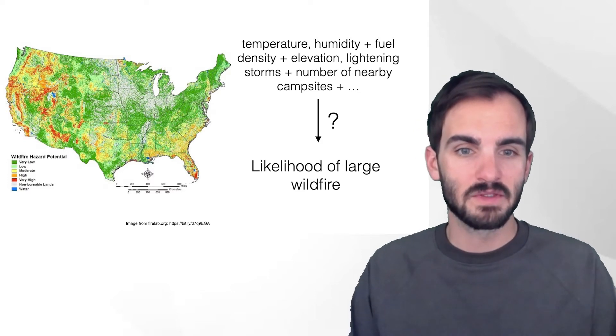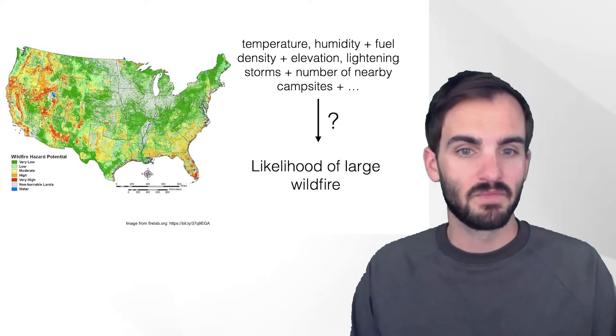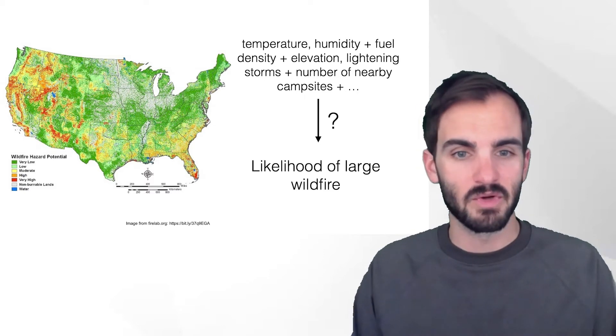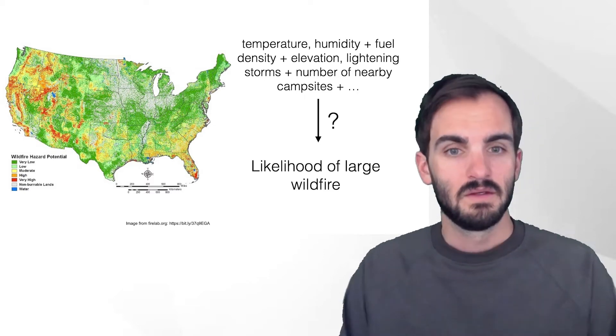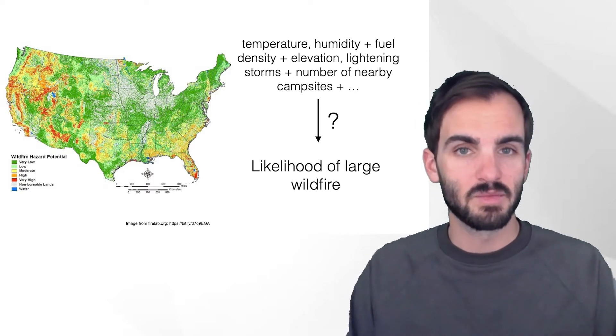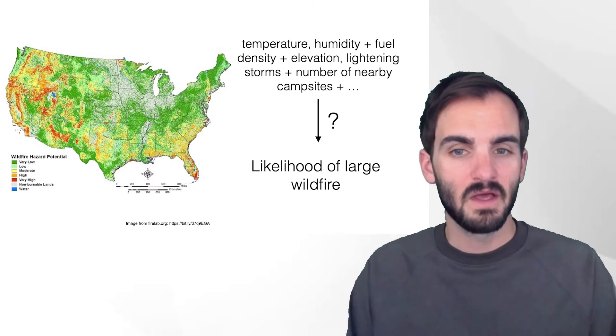So given these inputs and outputs, statisticians are tasked with coming up with a statistical model that can give the probability that a wildfire might ignite in a particular location, given those inputs of temperature, humidity, fuel density, etc. This wildfire model might be used for prediction, which means perhaps we'd like to try to predict whether a wildfire is likely to ignite in a given area in order to take some steps to decrease that probability.